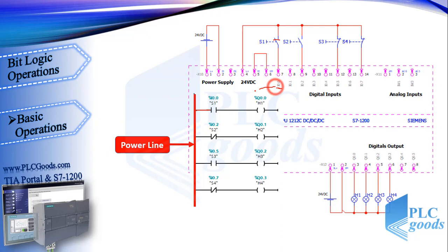Then the state of this contact with I0.0 address changes to 1 or true, so its normally open state changes to closed. Now the virtual power can reach this coil with Q0.0 address. This address refers to the first PLC output, so the PLC changes its state and lets the 24V DC turn on the H1 lamp. Briefly, reaching 24V DC to our digital inputs is equivalent to pressing push buttons in real life.